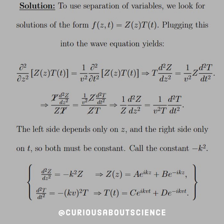Plugging this in and taking the derivatives, we get T(d²Z/dz²) = (1/v²)Z(d²T/dt²). Note that the partials go to totals thanks to the form of the solution. If we divide through by Z(z)T(t), we get cancellations with all z's on the left hand side and all t's on the right hand side. The left depends only on z and the right only on t, so both must be constant. We'll call that constant -k².